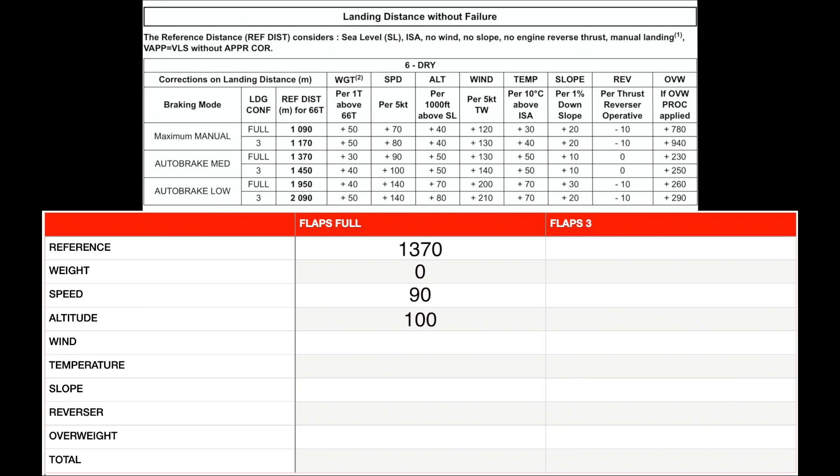For wind, to be conservative, let's assume a tailwind of approximately 5 knots — that adds 130 meters. For every 10 degrees Celsius above ISA, we add 50 meters. For Ranchi, assuming the hottest possible temperatures, I will be adding 150 meters. For slope, we get a 10-meter figure, but Ranchi actually has an upslope which helps stop the aircraft — being conservative, however, I will not apply any slope corrections.